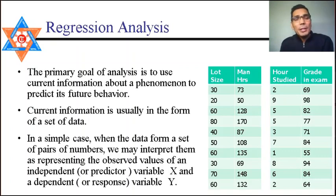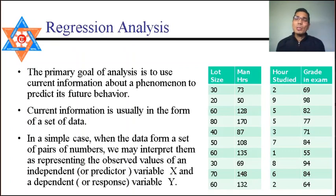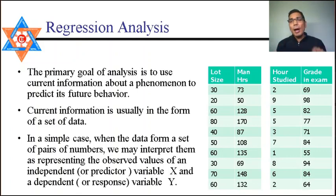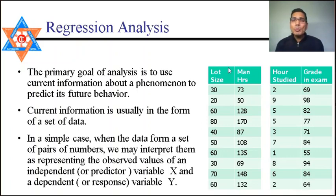The prime objective of regression analysis is to use current information for prediction of future values. This current information can be found in the form of a database. For example, a database of paired observations of lot size and man hours is shown, where for a lot size of 30, man hours used is 73, and for a lot size of 20, man hours used was 50.